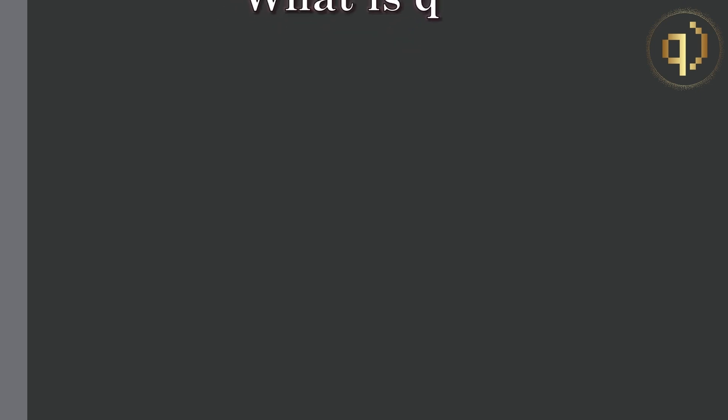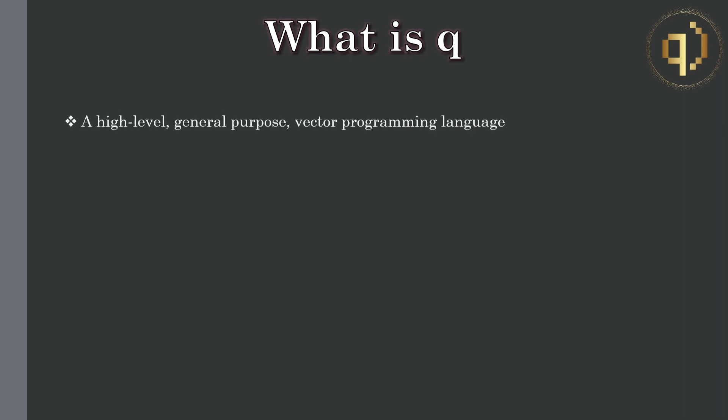So what is Q? Q is a high level, general purpose vector programming language. The terms high level and general purpose are somewhat familiar to most, but you may be less familiar with the term vector programming language. This simply means that Q has been designed to work efficiently with large vectors and lists of data.